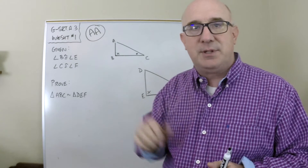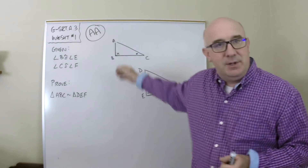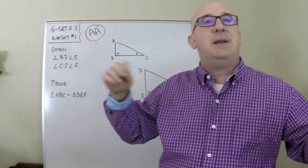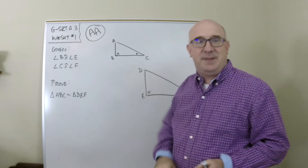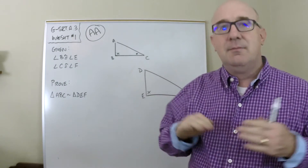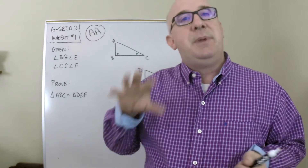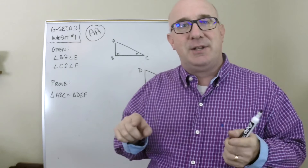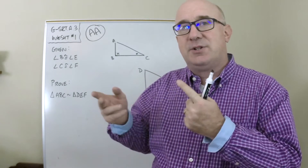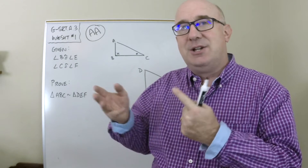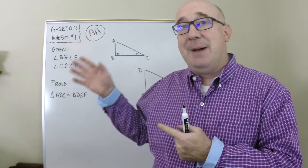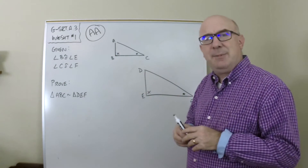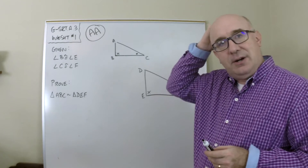If I can take the original triangle, rotate it, translate it, reflect it, or dilate it, and land it on the other shape, we have similarity. Because if the only movements I make are similarity transformations — rotation, reflection, translation, dilation — and I can map one onto the other, they're similar.